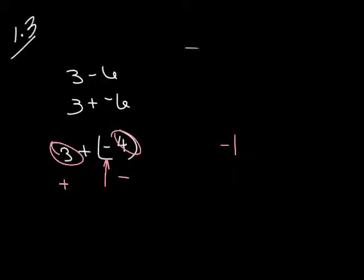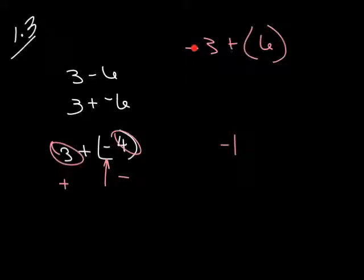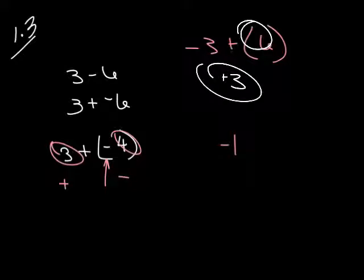If we have negative 3 plus 6, we have two different signs: a negative 3 and a positive 6. Signs are different, so we take the difference between 3 and 6, then put the sign of the largest number on the answer. In this case it's a plus because the 6 is larger, so the answer is positive 3. We don't need to write the plus sign when it's positive, but you can if it helps.